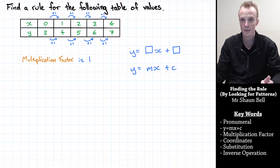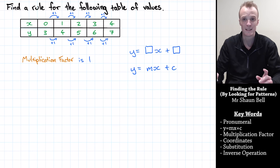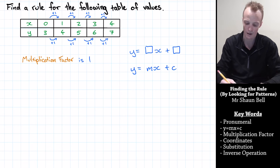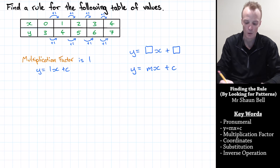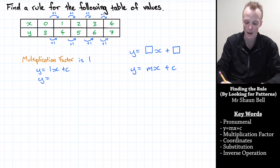So what does that mean for our rule? The m value is equal to one, so our rule is going to be y equals 1x plus c, which we can write as y equals x plus c.